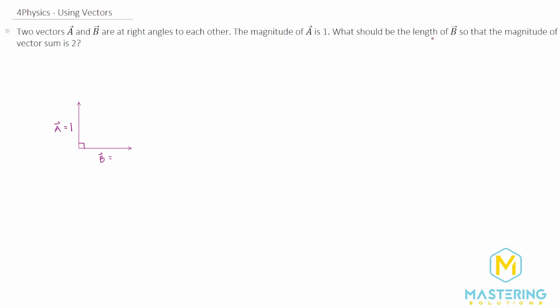And we don't know what b should be, that's what we're trying to find, so that the resultant vector, if we add them two together, is two. Whenever we add vectors, we want to do tail to tip. If we add a plus b...